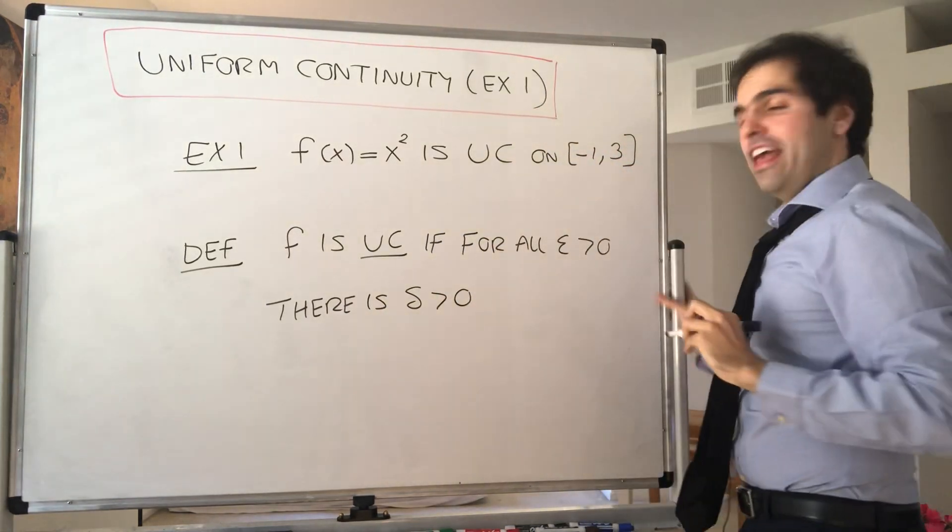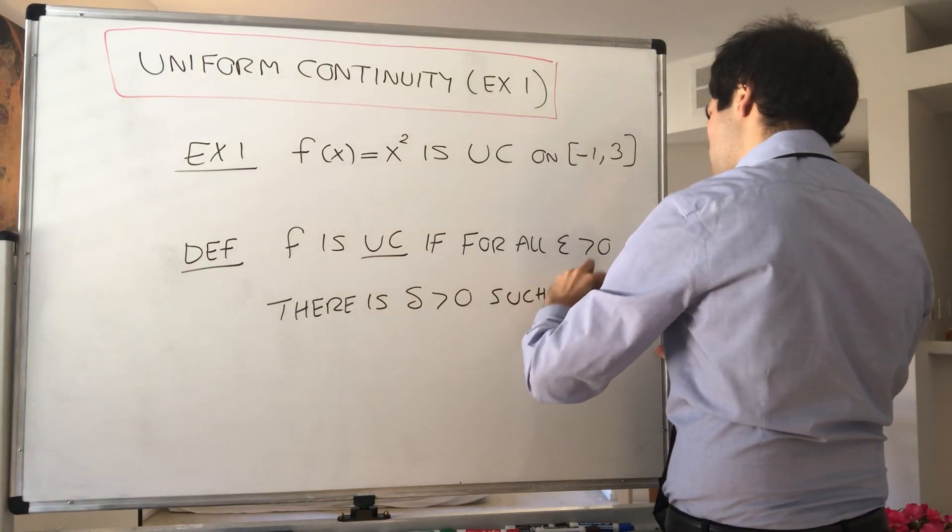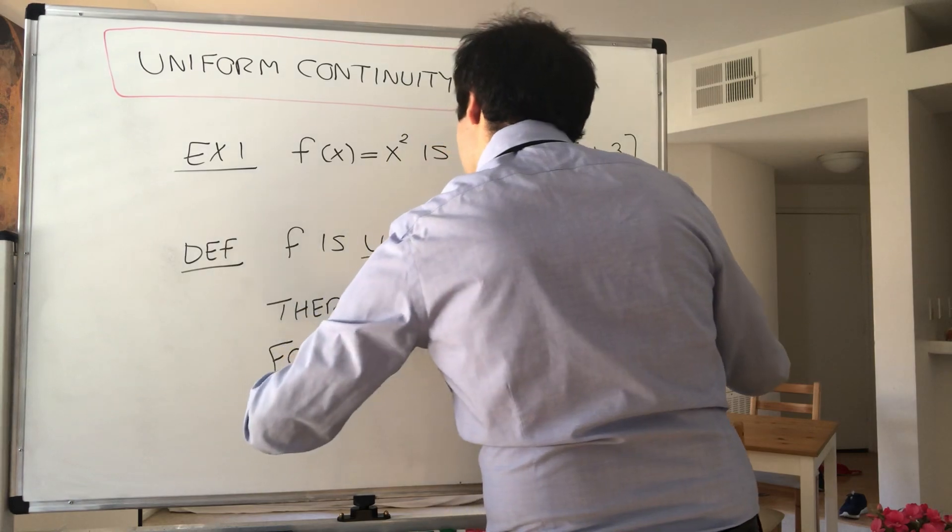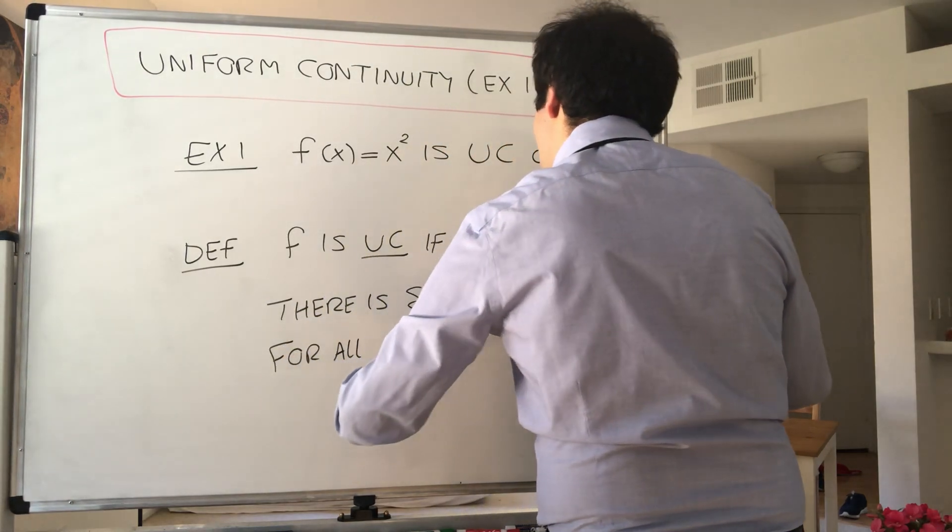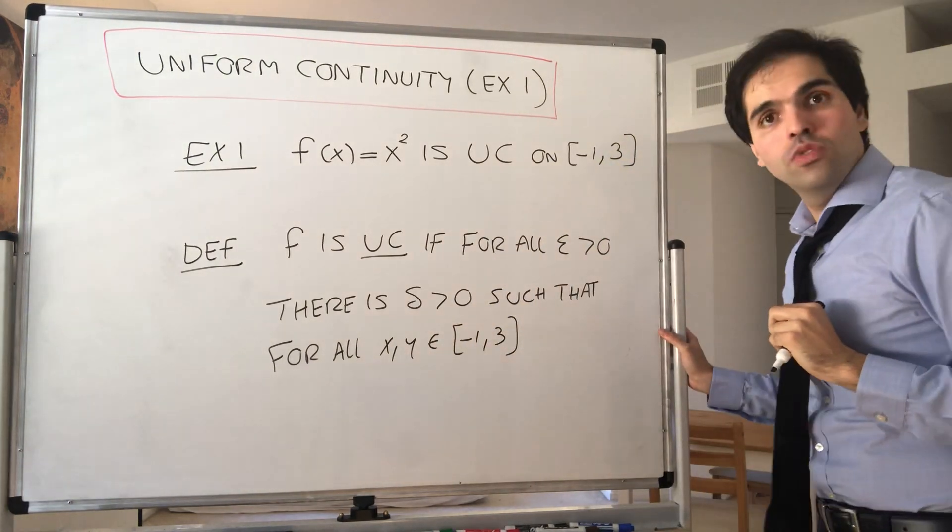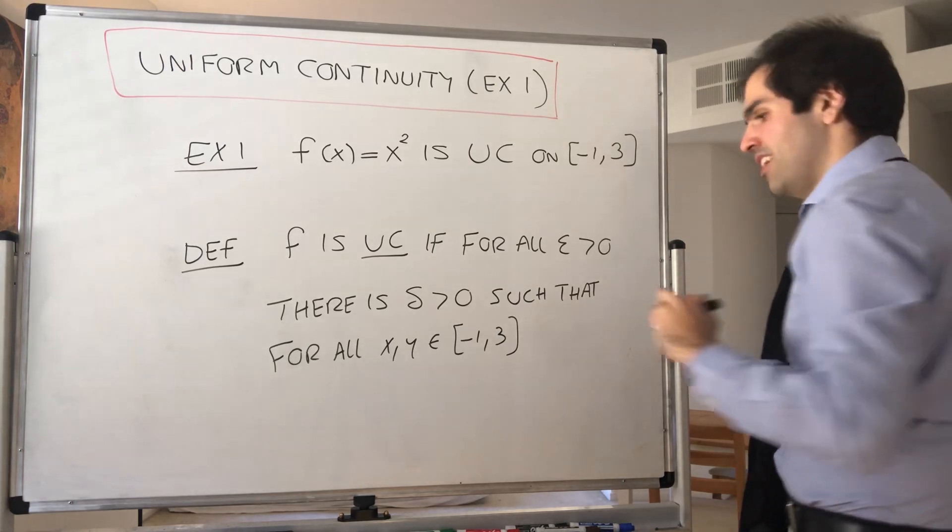such that for all x and y in that interval [-1, 3], if x and y are close enough together, then f(x) and f(y) are ε close.